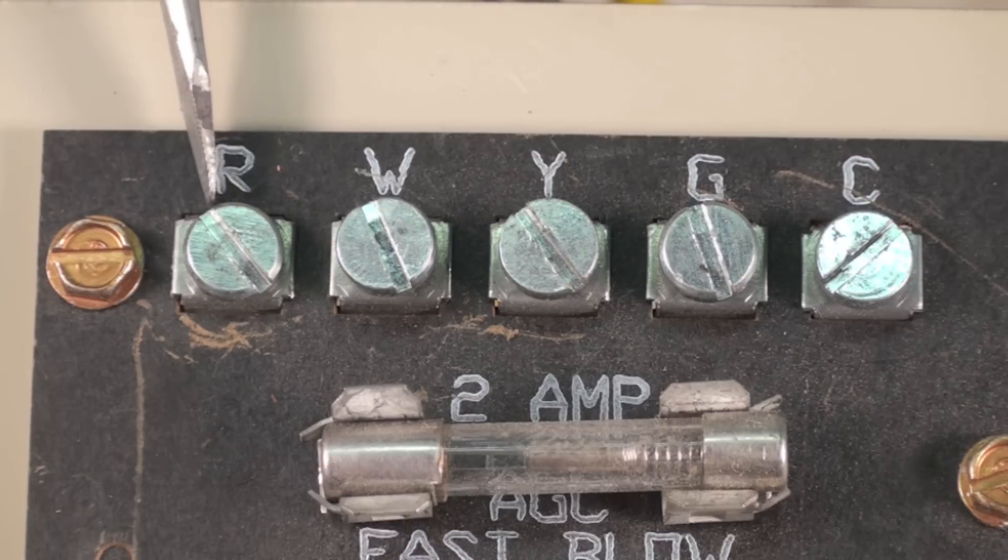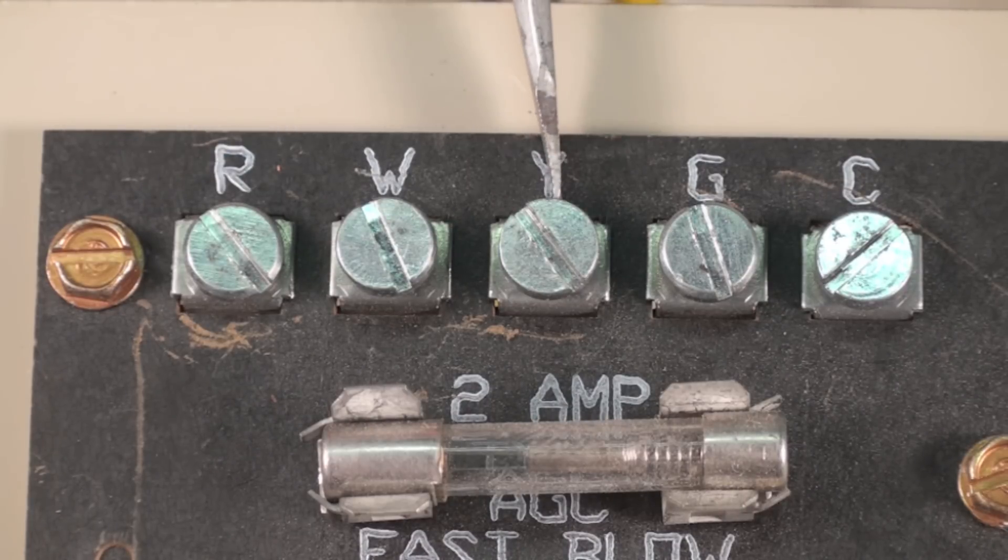Conversely, if it was cooling, R would come back as Y. And that would go to the outdoor unit to turn on the contactor to the outdoor unit.